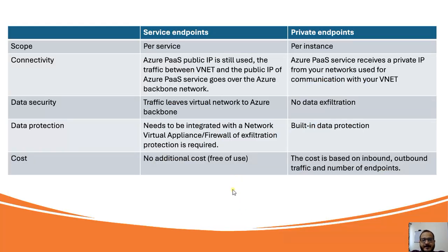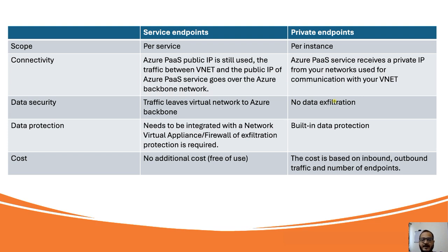Now let's understand the key differences between service endpoint and private endpoints. Looking at scope - at what level we can create the services: service endpoint is created at a service level, like Microsoft storage account. Private endpoint is used per instance - like for blob, table, queue, or file, you have to create connectivity at a per-instance level. Service endpoint will still use the public IP address, but in the case of private endpoint we use completely private communication between the resources.